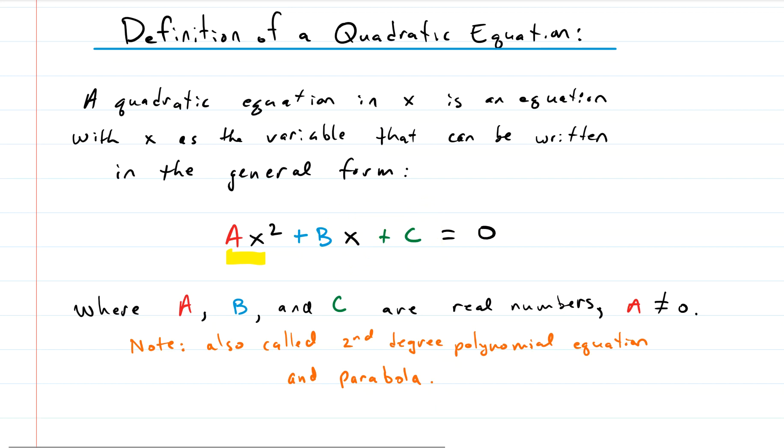A, B, and C are just constants, just real numbers. A quadratic is also called a parabola and it's also called a second degree polynomial equation. And of course, you need the equation, so you've got to have the equal sign. And often times the zero is on the right hand side if it's in standard form.